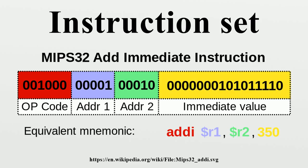Other unusual zero-operand instruction sets lack any operand specifier fields, such as some stack machines including NOSC. Many conditional instructions often have a predicate field — a few bits that encode the specific condition to cause the operation to be performed rather than not performed. For example, a conditional branch instruction will be executed and the branch taken if the condition is true, so that execution proceeds to a different part of the program; and not executed and the branch not taken if the condition is false, so that execution continues sequentially. Some instruction sets also have conditional moves, so that the move will be executed and the data stored in the target location if the condition is true, and not executed and the target location not modified if the condition is false.